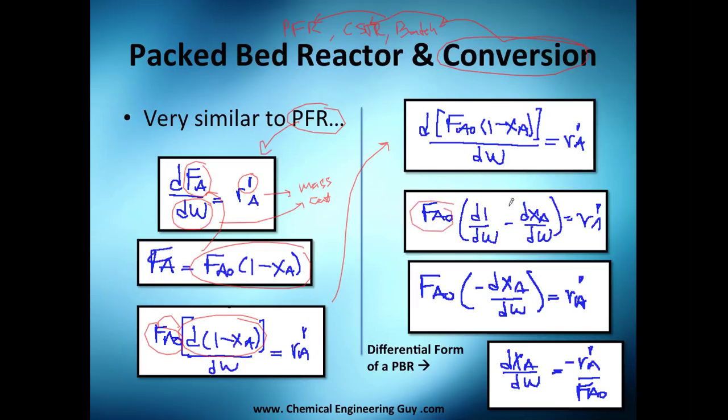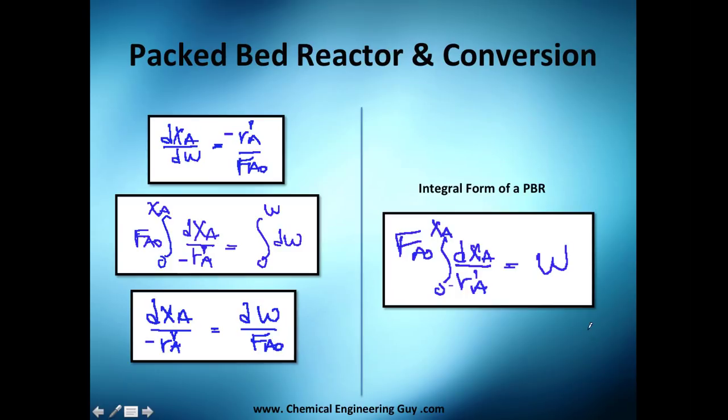I'm going to take it out, and I'm doing this very fast because you've seen it before. The differential of one is zero, you get this negative, then we turn this here, and you get the differential form of a packed reactor in terms of conversion.